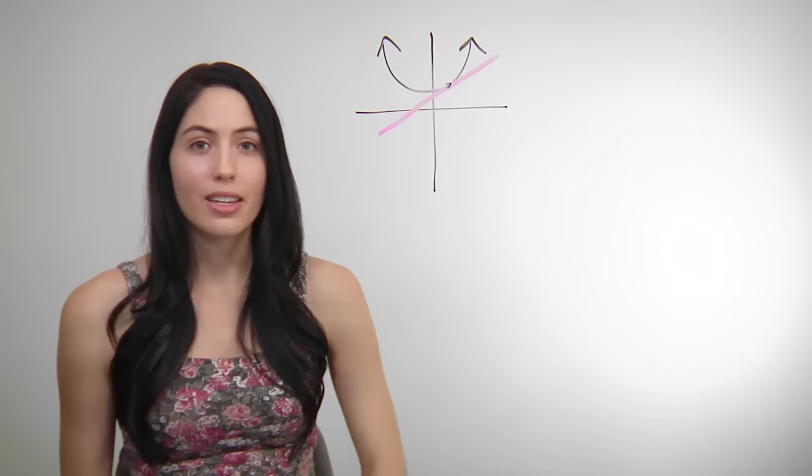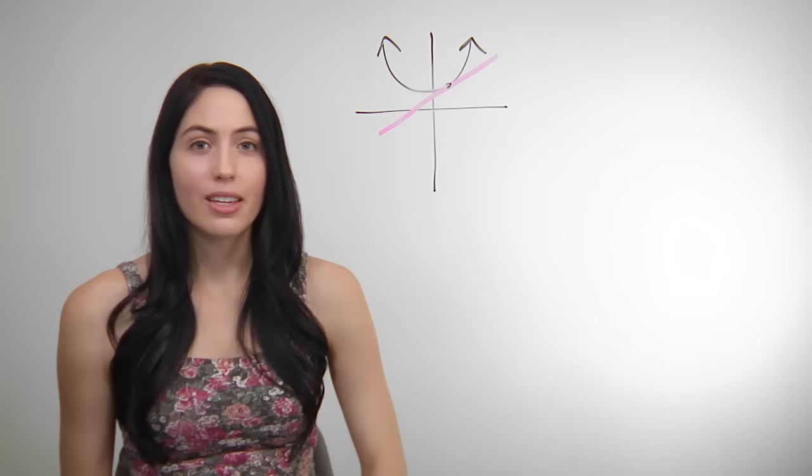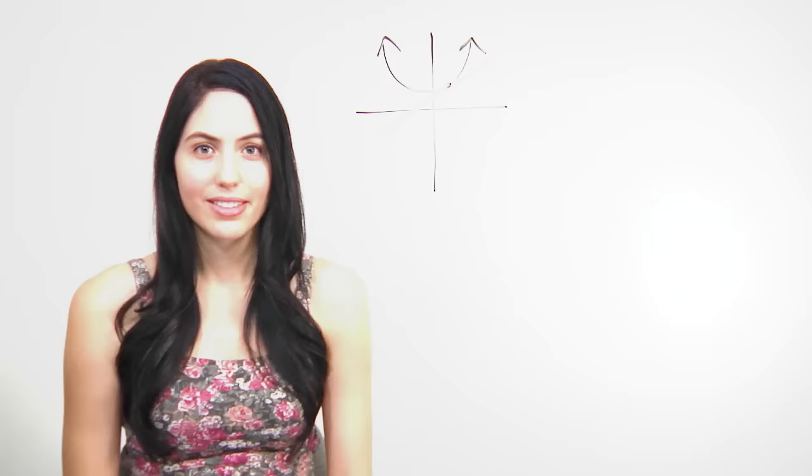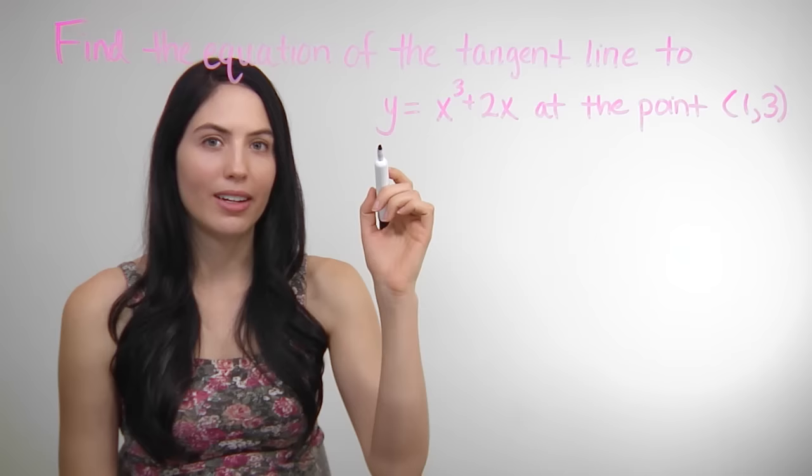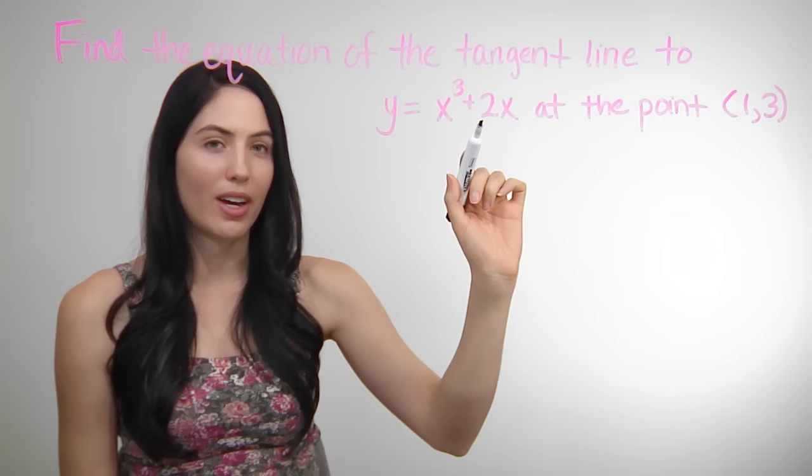Tangent line problems can come in many forms, but thankfully you can use the same four steps in all of them. Say you have a problem that says: find the tangent line to y equals x cubed plus 2x at the point.